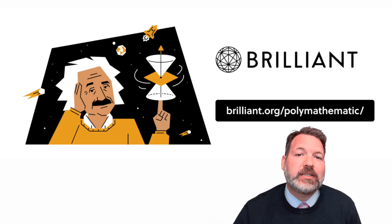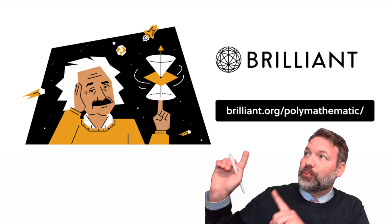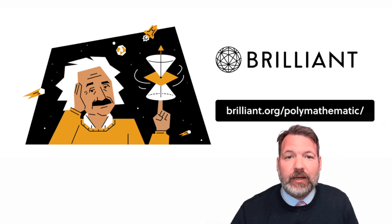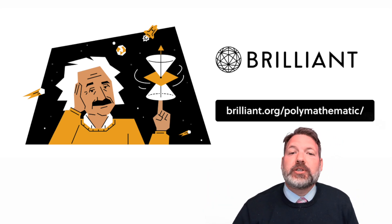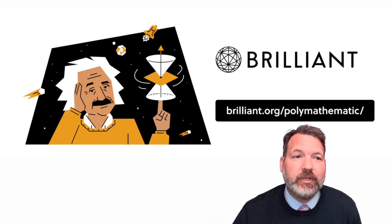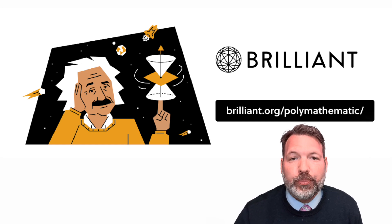To try everything Brilliant has to offer free for a full 30 days, check out Brilliant.org/polymathematic or click on the link in this video's description and the first 200 of you to do this get 20% off an annual premium subscription.